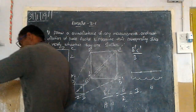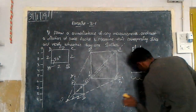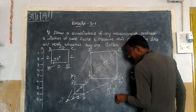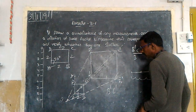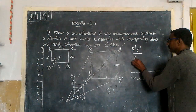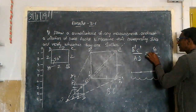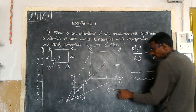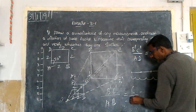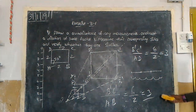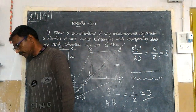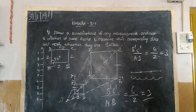Here I made a small mistake. This original side is 2 units, and the dilated side is 6 units. So B'C' divided by BC equals 6 divided by 2, which equals 3. What is 3? It is the scale factor. Construction is complete.